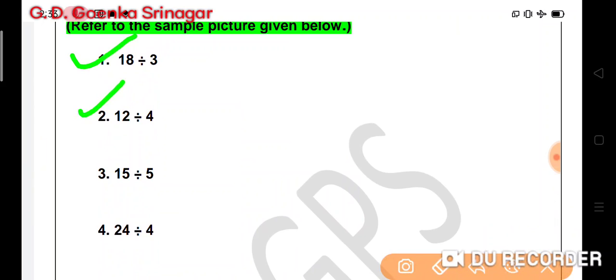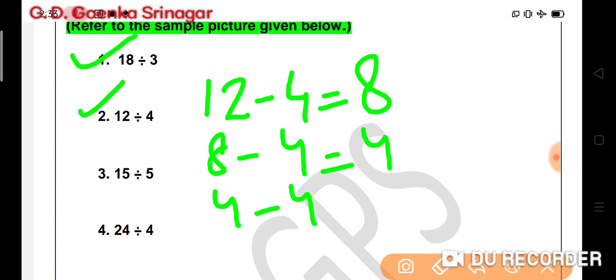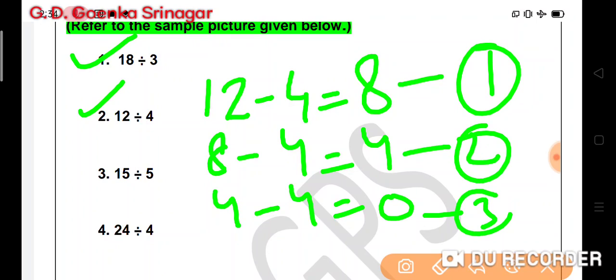So we have 12 divided by 4. So 12 minus 4 is equal to 8, then 8 minus 4 is equal to 4, and 4 minus 4 is equal to 0. Now we will count the number of steps: 1, 2, and 3. So our answer is 12 divided by 4 is equal to 3. This is our answer because we repeatedly subtracted 4 three times till we got 0.